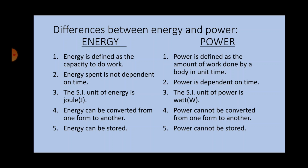Differences between energy and power: Energy is defined as the capacity to do work, while power is defined as the amount of work done by a body in unit time. Energy spent is not dependent on time. The SI unit of energy is Joule, and the SI unit of power is Watt. Energy can be converted from one form to another, as we have seen in energy transformation and conversion. Energy can be stored, whereas power cannot be stored.